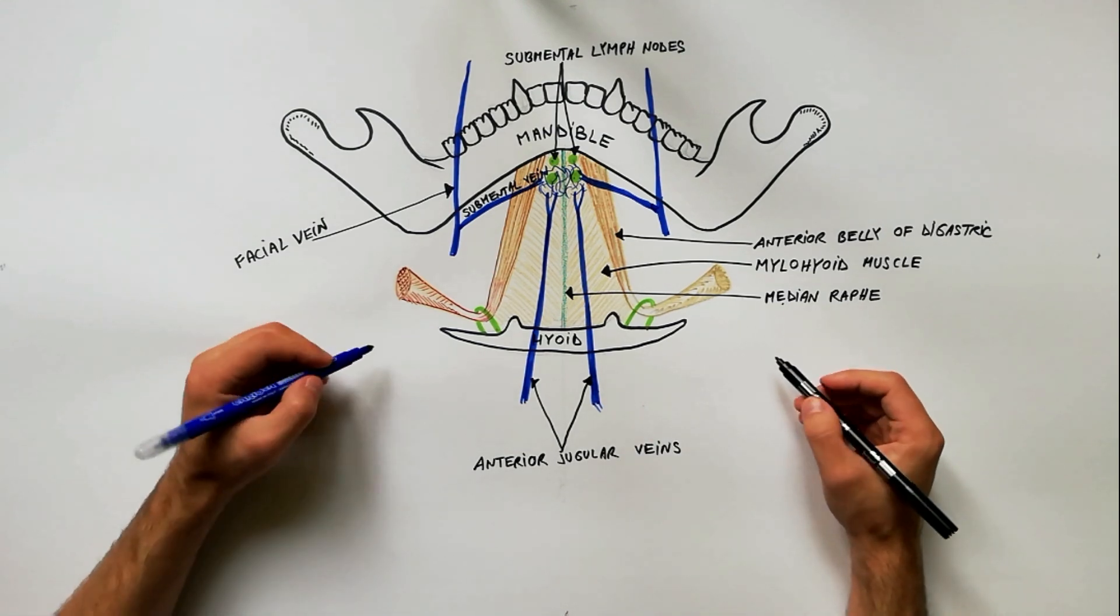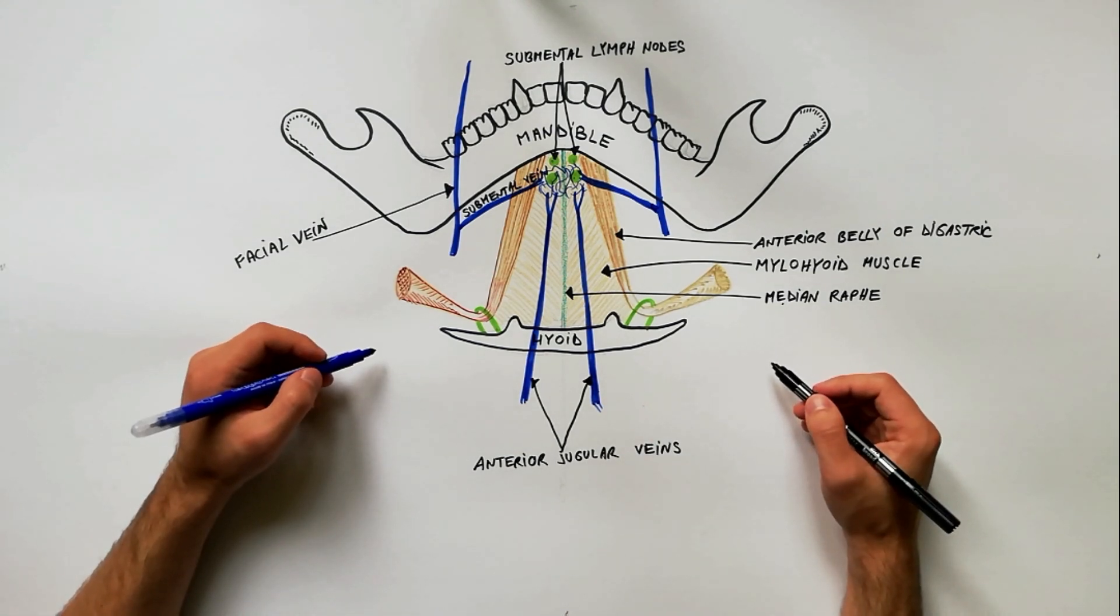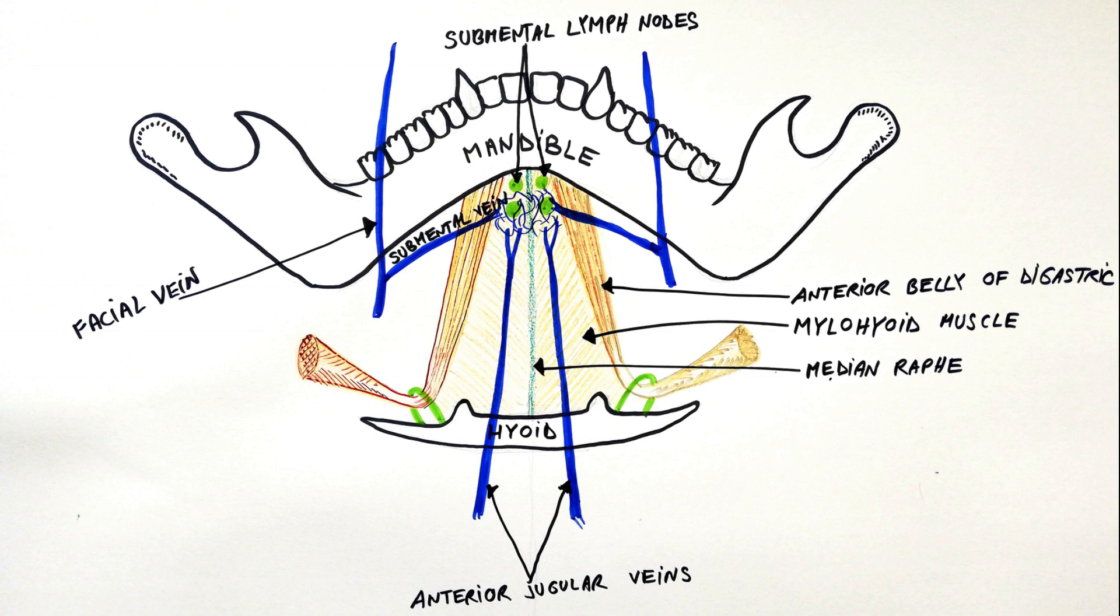Keep in mind that the contents of the Submental Triangle lie over the roof of the Submental Triangle, represented by the investing layer of deep cervical fascia.